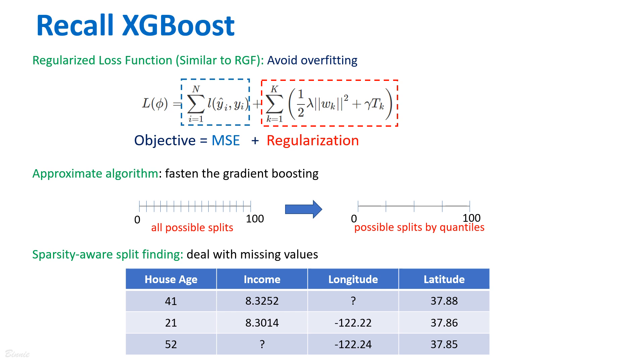Furthermore, XGBoost also supports the approximate algorithm to split the possible points by quantiles to fasten the training. The sparsity-aware split finding helps deal with the feature's missing values.